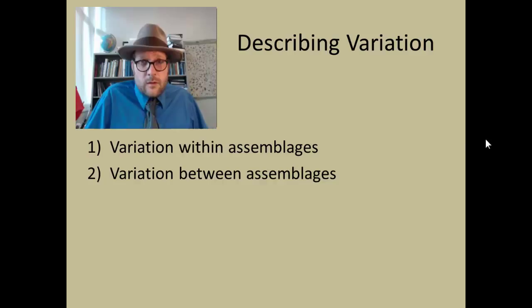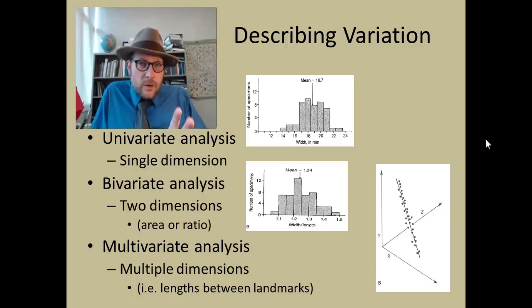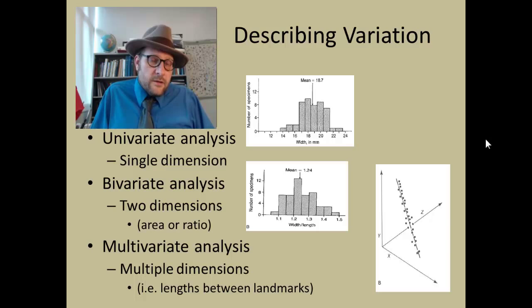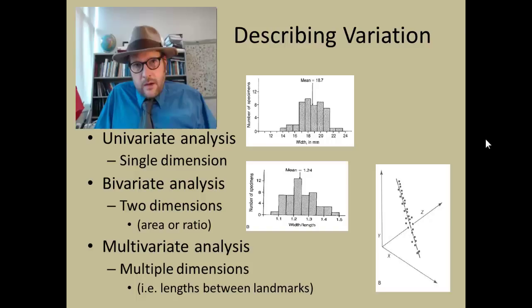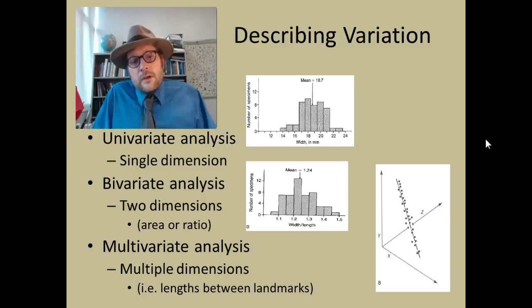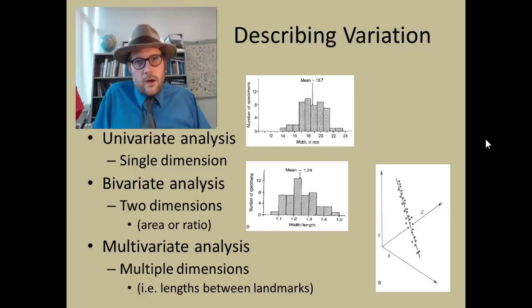One thing you can do is a univariate analysis, where you take one dimension such as width and count the number of specimens at those widths. You measure every single fossil with calipers, record the width, and get a distribution depicted as a histogram. Another option is a bivariate analysis, where you look at two dimensions — for example the width and length of a shell — combining them into a ratio. That's a bivariate analysis because you're looking at two measurements.